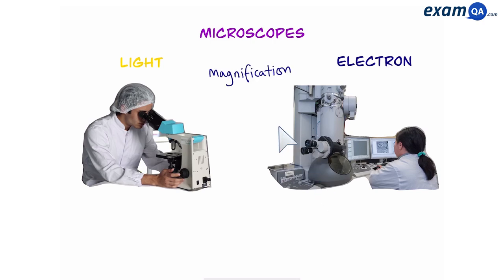First of all, in terms of magnification, also known as the zooming power, electron microscopes are much stronger at magnifying objects. Then resolution, or how much detail you can see between different points, is again higher in the electron microscope.